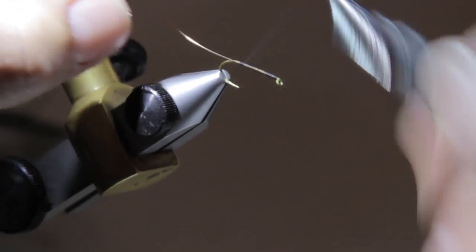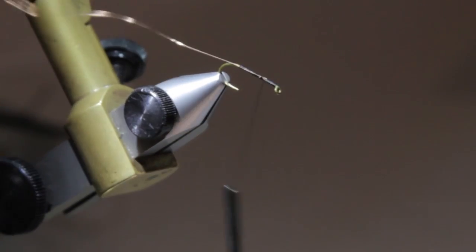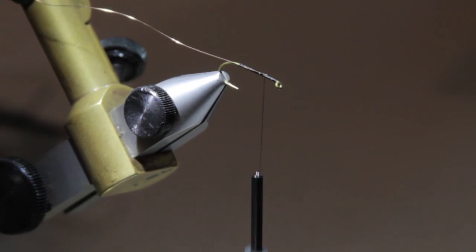First we're going to start with a little copper wire. This is small ultra wire. Then we're going to take a little quick descent dub in brown. This is a hairline product.